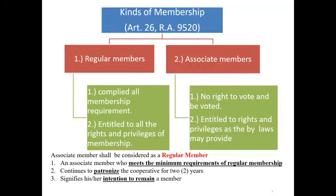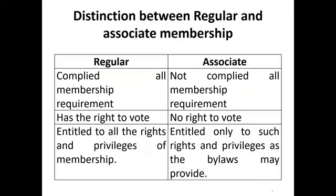Once those three requirements are met, the associate member is treated as a regular member — he or she now has the right to vote and the right to be voted upon. To summarize the distinction: a regular member has complied with all membership requirements and has the right to vote, while an associate member has not complied with all requirements, has no right to vote, and is only entitled to privileges provided in the bylaws.